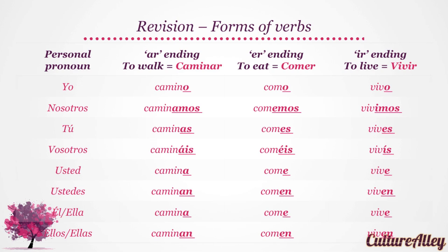Finally, let's look at the forms of to live or vivir, which ends in IR. They are: yo vivo, nosotros vivimos, tú vives, vosotros vivís, usted vive, ustedes viven, él o ella vive, ellos o ellas viven.